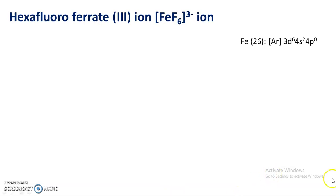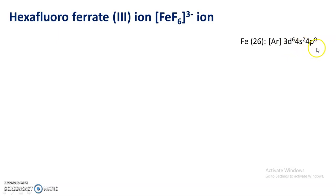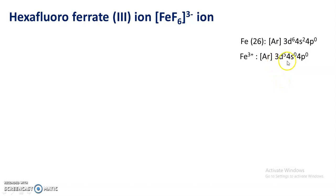First of all, the atomic number of iron is 26, and its electronic configuration is [Ar] 3d⁶ 4s² 4p⁰. In this complex, iron is the central atom with an oxidation state of plus three. In the plus three state, its electronic configuration becomes 3d⁵ 4s⁰ 4p⁰, so three electrons will be lost by the iron to get Fe³⁺.